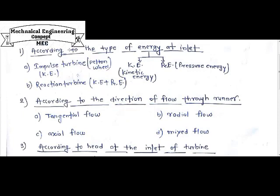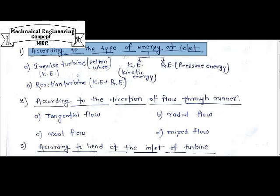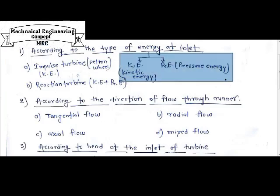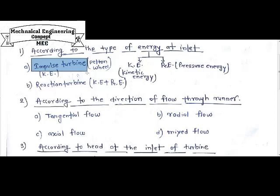The first one is according to the type of energy at inlet — meaning the energy which is entering into the turbine. On the basis of that, you can categorize the turbine. There are two basic types: kinetic energy and pressure energy, or a combination of both. The first type is the impulse turbine, in which the inlet energy is kinetic energy.